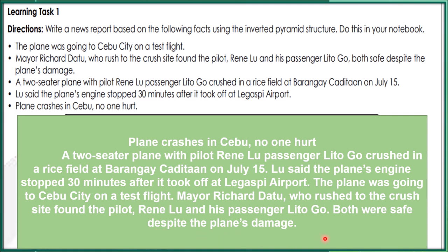How did we do this, children? Start with the title, then arrange the questions: who, what, where, when, and why or how. Who are they? The first sentence answers who, followed by the others. The questions here are complete — who, what, where, when, and why or how it happened. Do you get it, kids? Good.